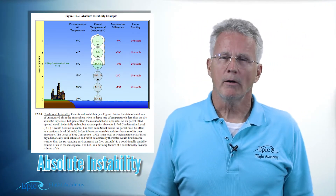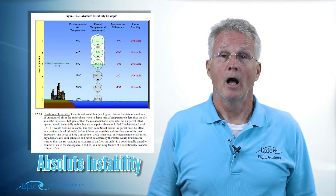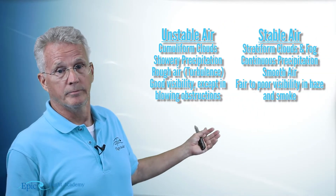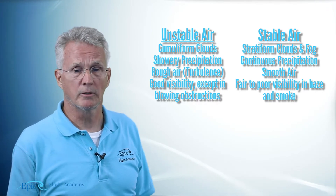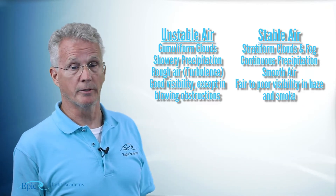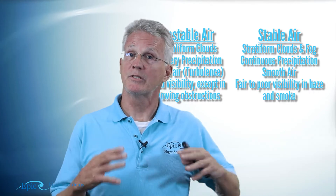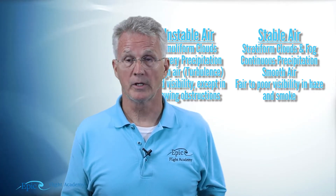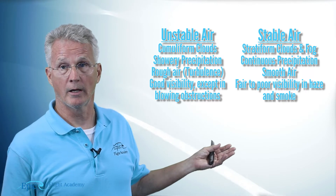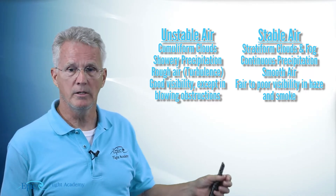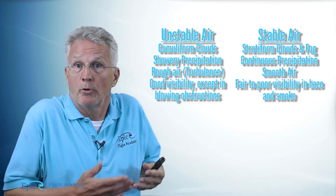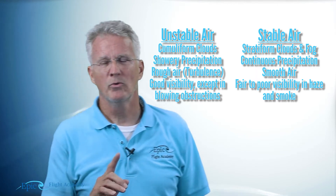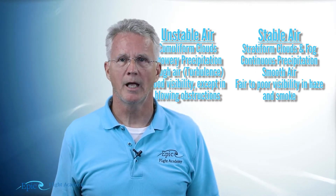The characteristics for unstable air are: cumuliform clouds which give us showery precipitation, some rough air and turbulence, but pretty good visibility except in blowing obstructions. Stable air gives us stratiform clouds and possibly fog, continuous-type precipitation, much less turbulence — actually pretty smooth air — but fair to poor visibility in haze.